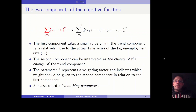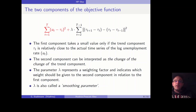The second component can be interpreted as a change of the change of the trend component. The parameter lambda is a weighting factor indicating how much weight should be given to the second component relative to the first. The first component receives a weight of one, and the second component receives a weight of lambda. Lambda is also called the smoothing parameter because it controls how smooth the trend line will be — whether it will be a straight line or whether it will show a higher degree of volatility.